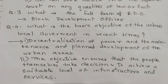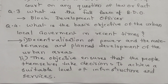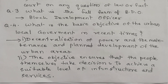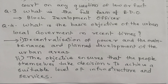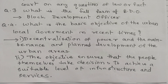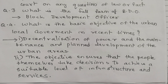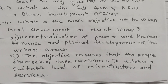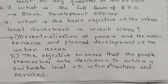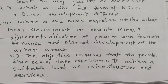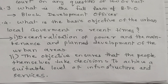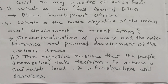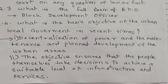Question number 3: What is the full form of BDO? The full form of BDO is Block Development Officer. Question number 4: What is the basic objective of the urban local government in recent times? The basic objectives are: decentralization of power, and the maintenance and planned development of urban areas. Second, the objective ensures that people themselves take decisions to achieve a suitable level of infrastructure and services.